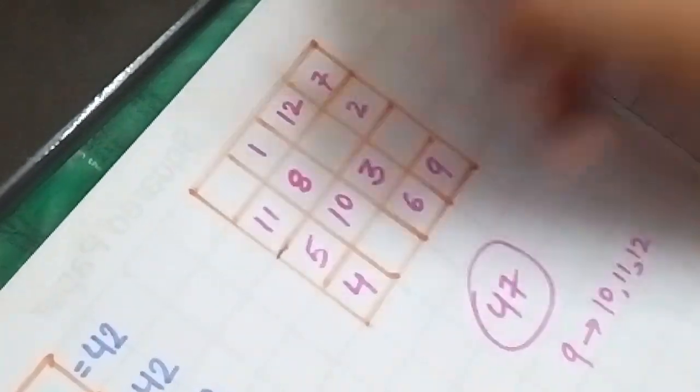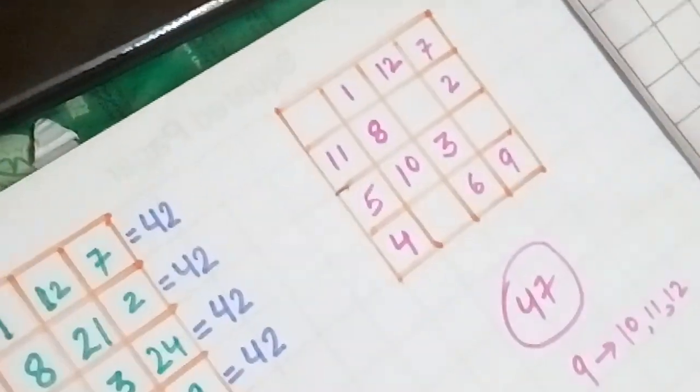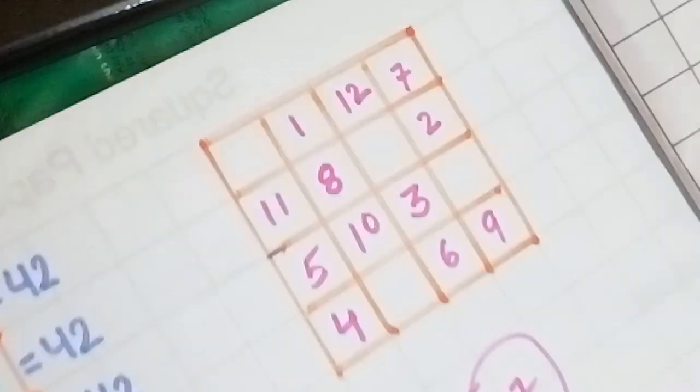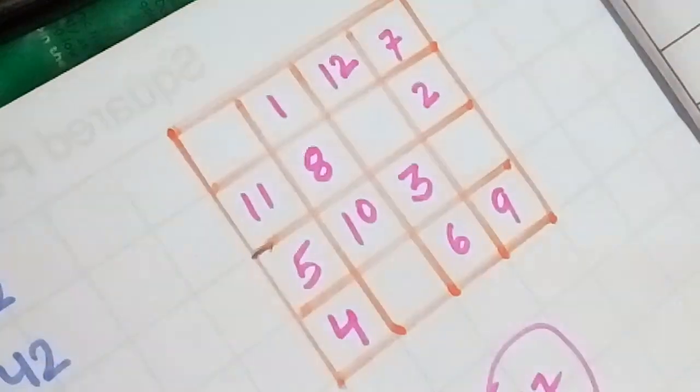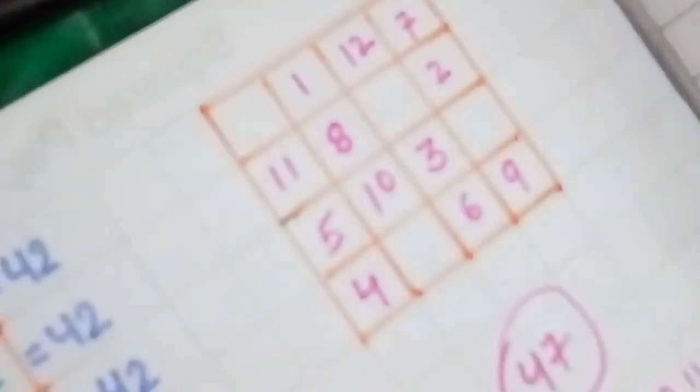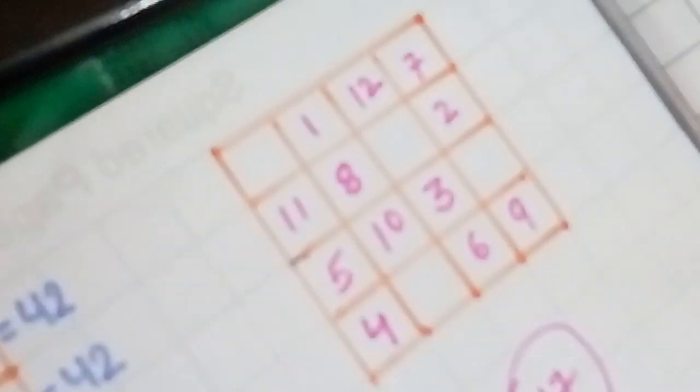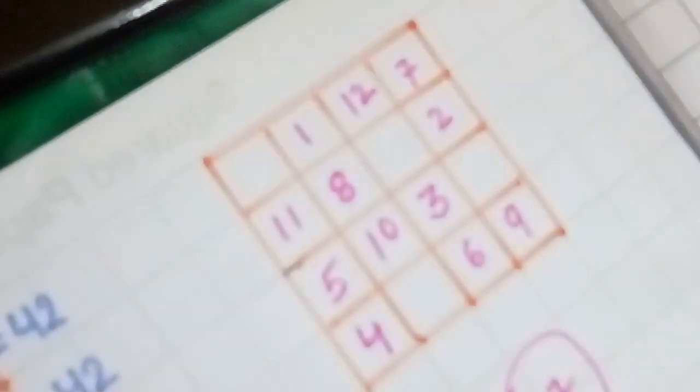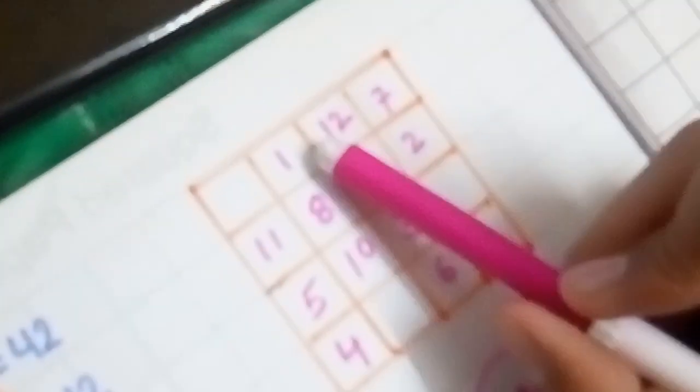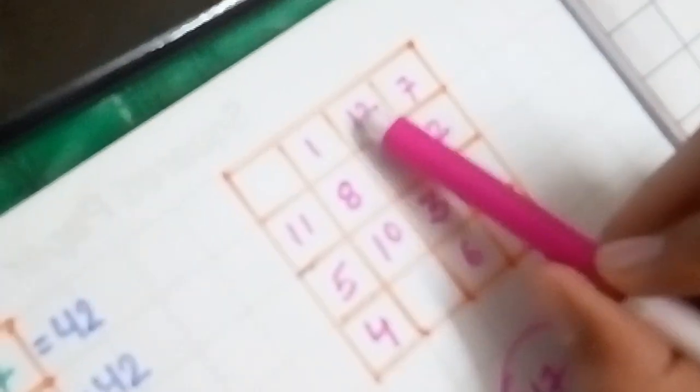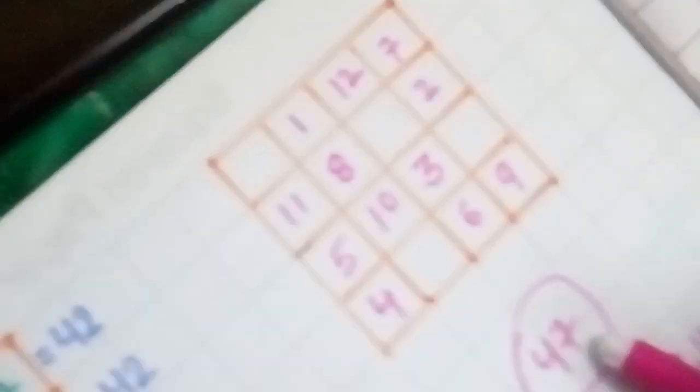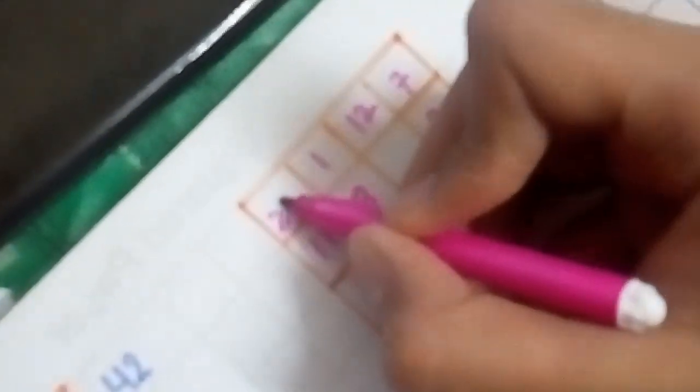So you can see 12 blocks of this magic square are completed. Now this is very simple for us to insert 4 other blocks which are left. Now we can see here that the sum of these numbers 1, 12, and 7 is 20. So we subtract the 20 from 47, we get 27. So we write 27 here.